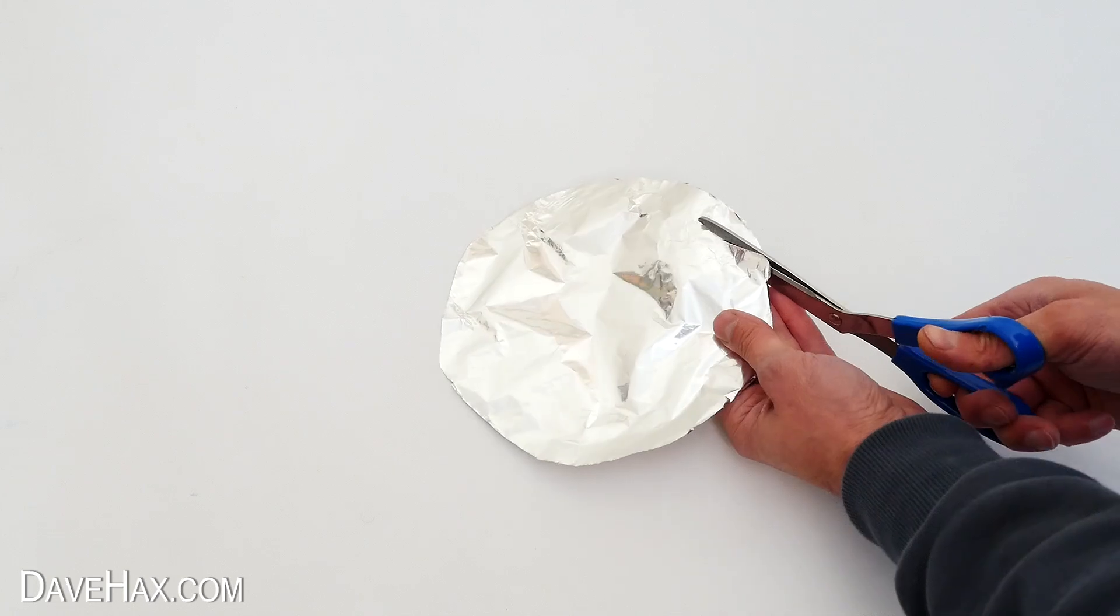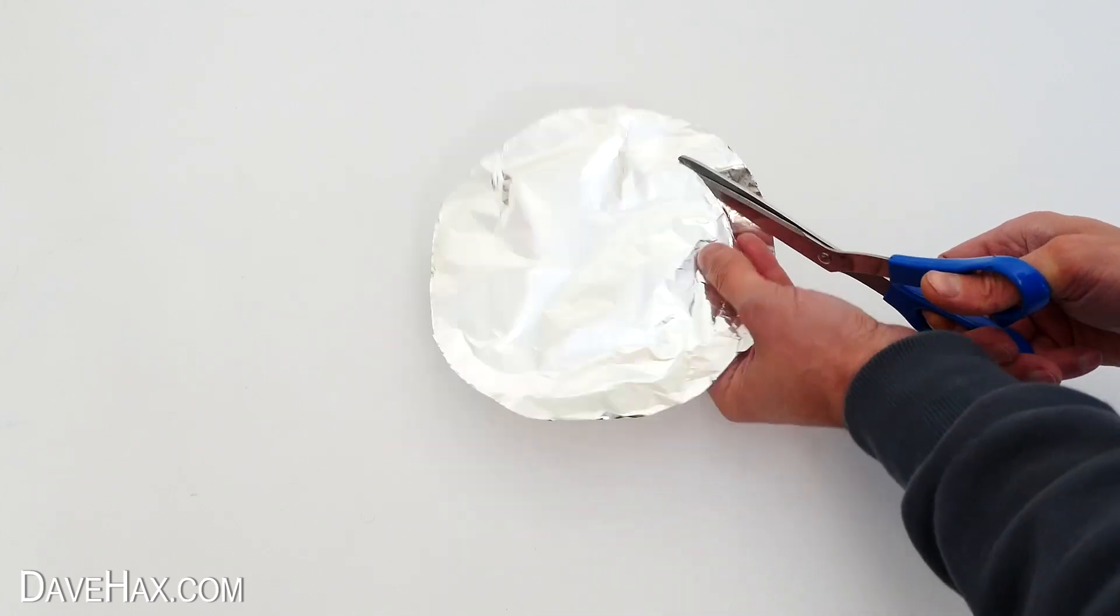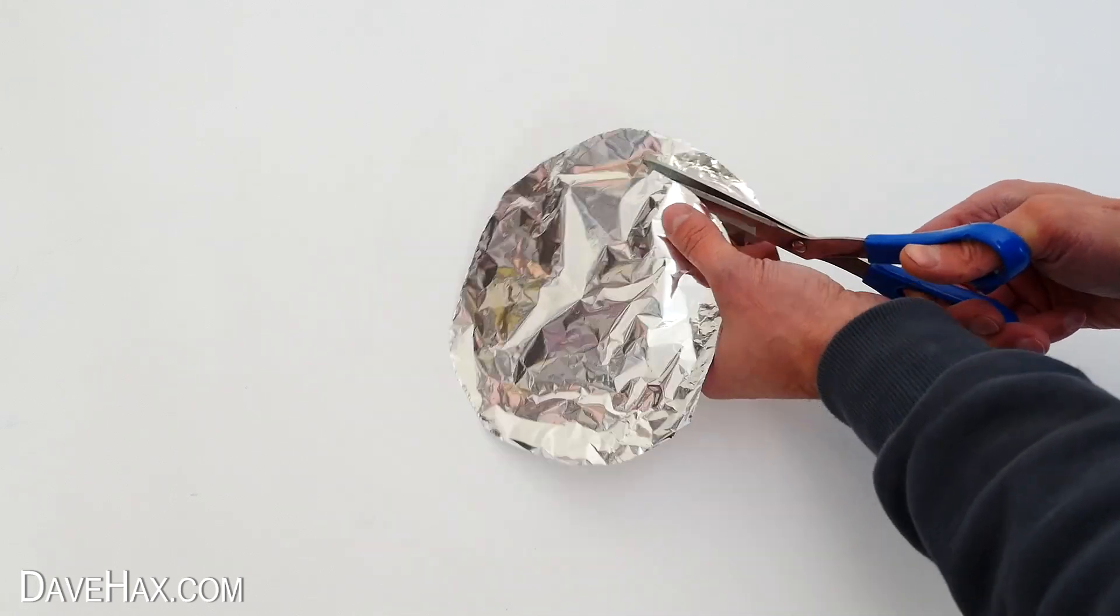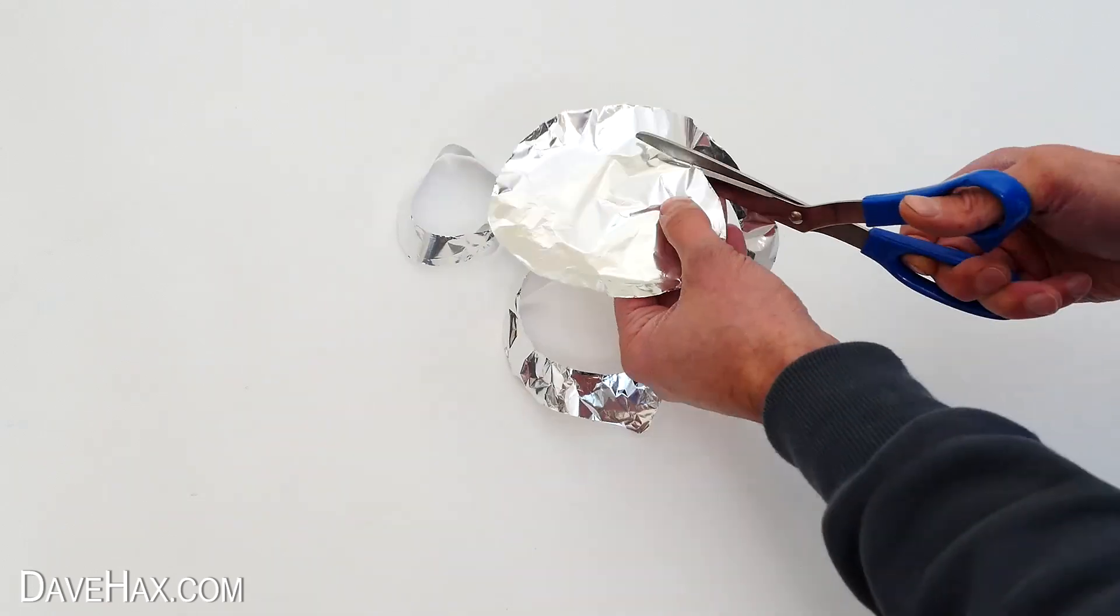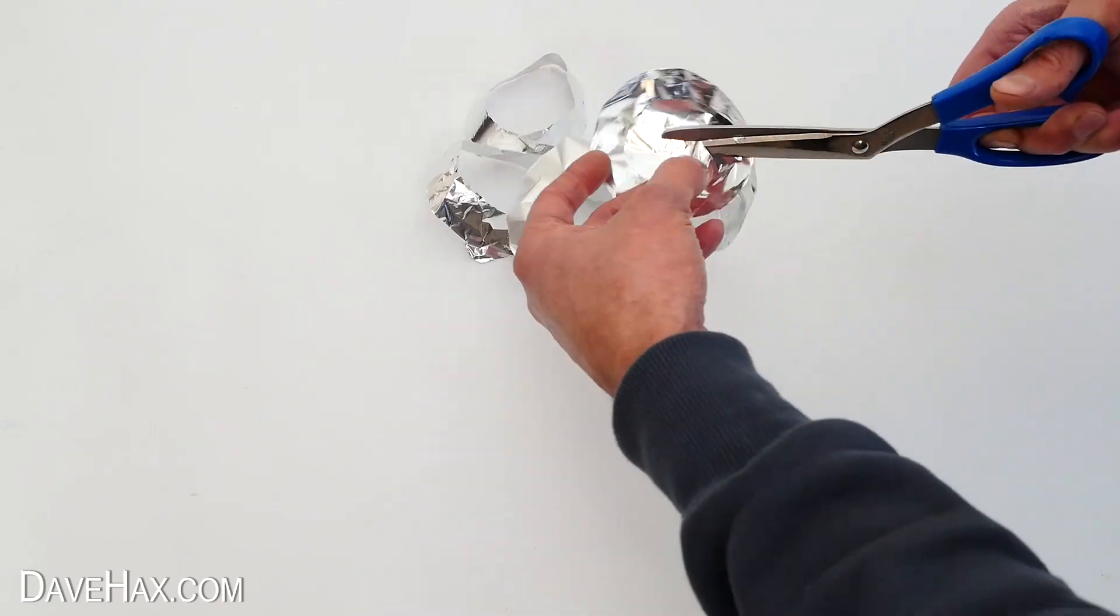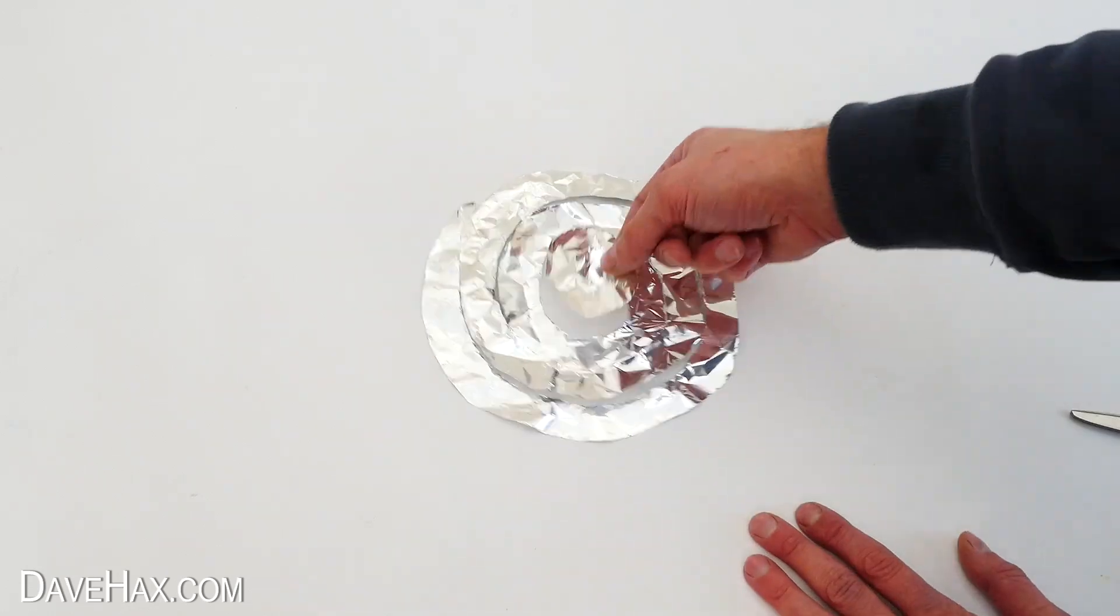Next we need to use the scissors again to cut the circle into a spiral. I stayed about an inch from the outside wall of the circle and kept cutting round and around until I reached the centre. Lay it back flat and there's our spiral.